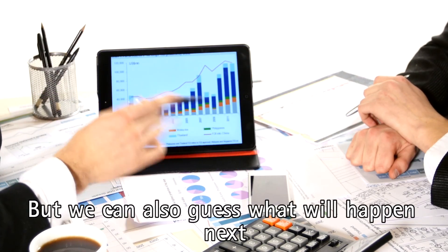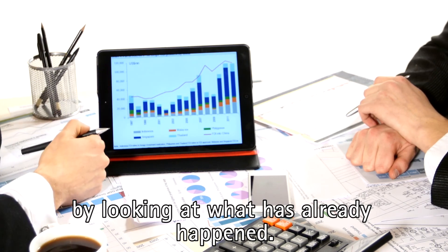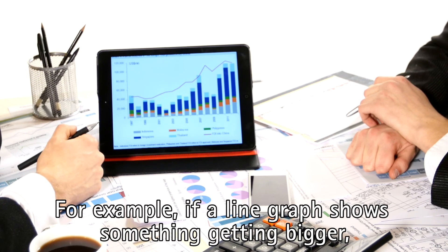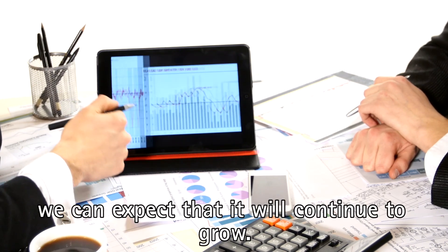But we can also guess what will happen next by looking at what has already happened. For example, if a line graph shows something getting bigger, we can expect that it will continue to grow.